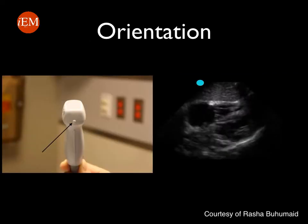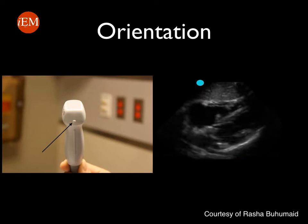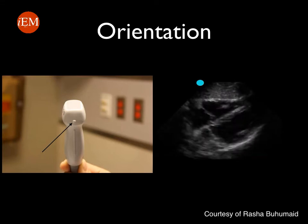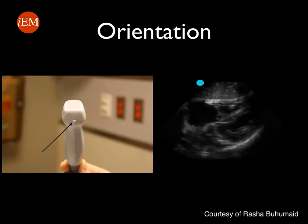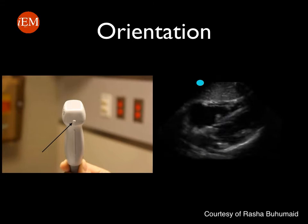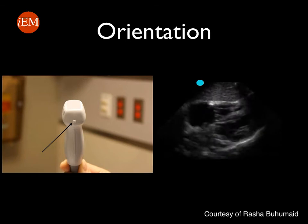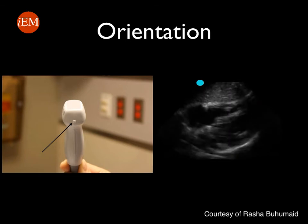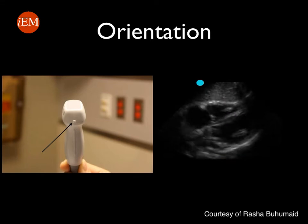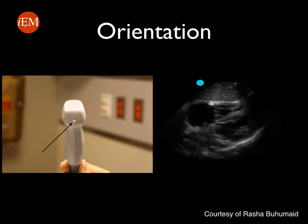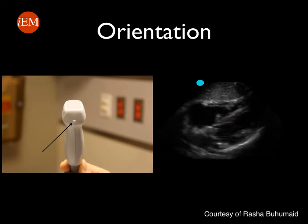A quick review of the orientation. Each probe has a dot that corresponds to the probe marker, and this probe marker corresponds to the green dot on the ultrasound image. It is very important to locate your probe marker before performing the study, because that will help you have the correct orientation.